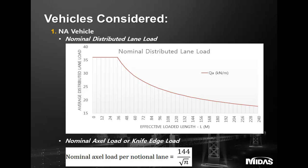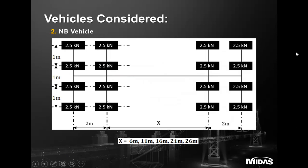The next vehicle considered is the NB vehicle. For the NB vehicle, the wheel spacing is 3 meters; there are four wheels in the transverse direction, and there is only one vehicle possible per carriageway in accordance with the standard. The XL spacing can vary to cause the worst effect — the central part X can be 6, 11, 16, 21, or 26. NB 24 and NB 36 are available as standard unit NB vehicles.